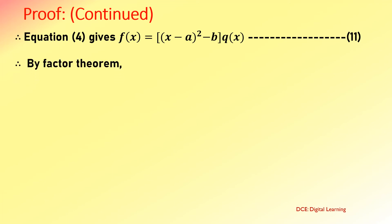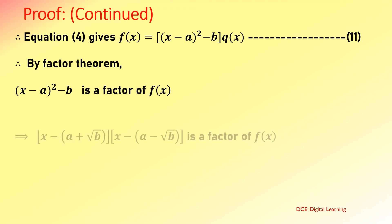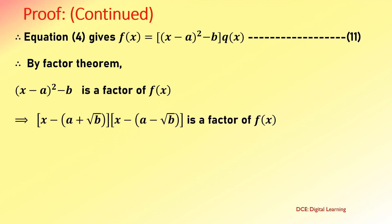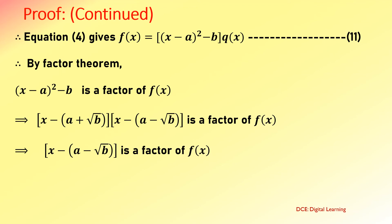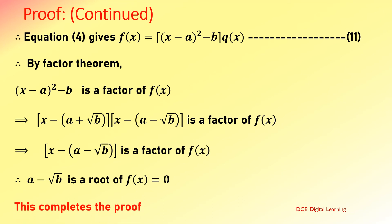Therefore, by the factor theorem, (x−A)²−B is a factor of f(x), which implies (x−(A+√B))(x−(A−√B)) is a factor of f(x). Therefore, A−√B is a root of f(x)=0. This completes the proof.